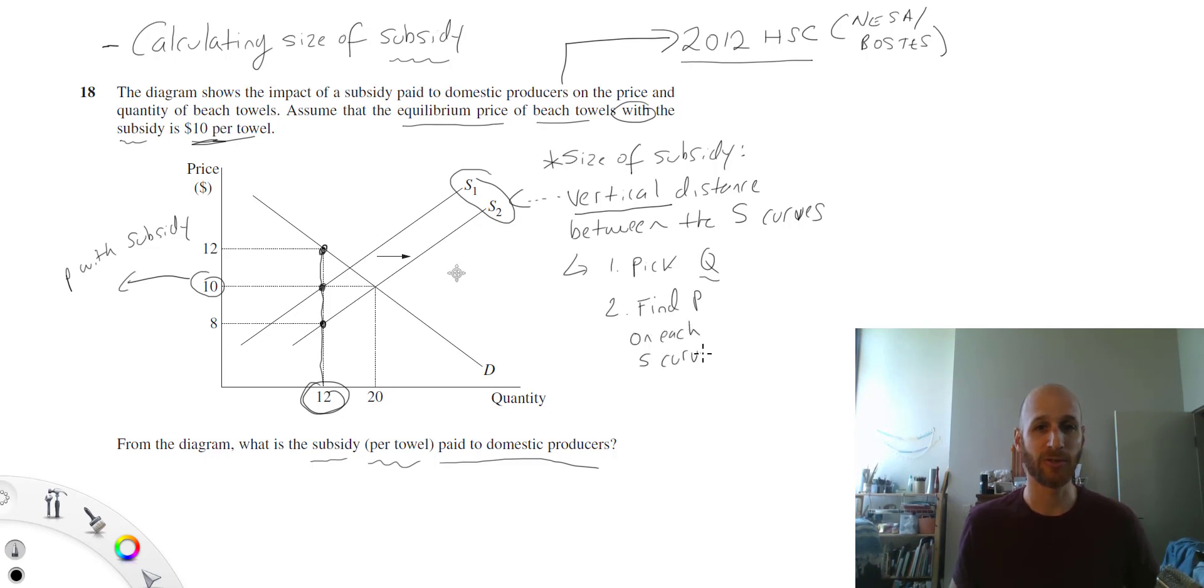I can see here that I've got A being there, I've got 10 being here. So I can see that this distance here, between point A and point B, this is the vertical distance between the two supply curves.